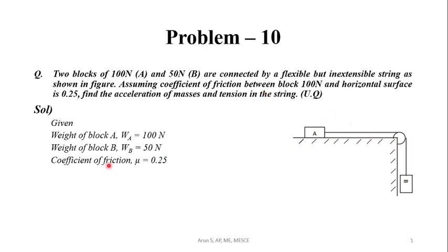I attend block A, WA is equal to 100 N. Block B, WB is equal to 50 N. Block A rests on the surface with coefficient of friction mu equal to 0.25.